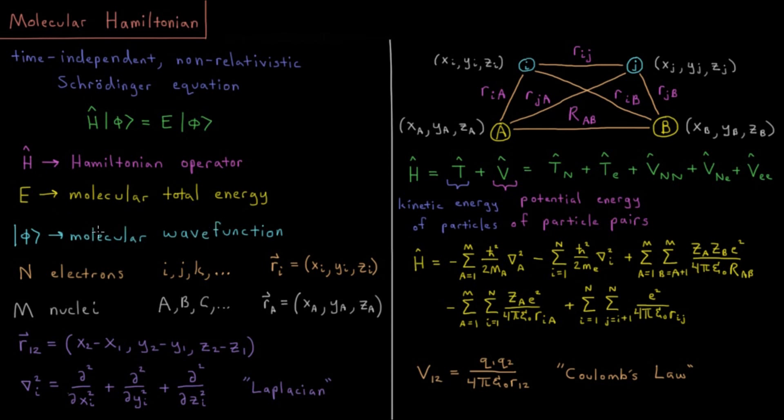In this case, our system is always some molecule, some collection of electrons and nuclei. This H is the Hamiltonian operator, which we discuss in more detail later, and E is our molecular total energy. We say this is time-independent because we're not including the time part, and non-relativistic because we're not including effects of relativity when particles get close to the speed of light.